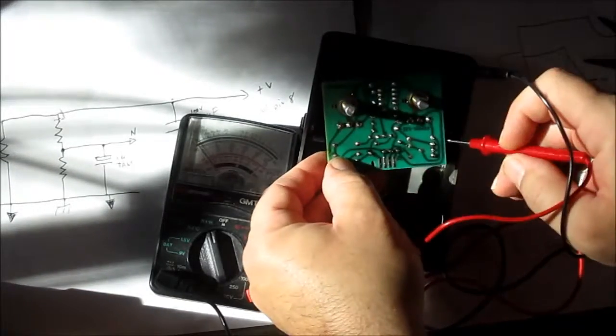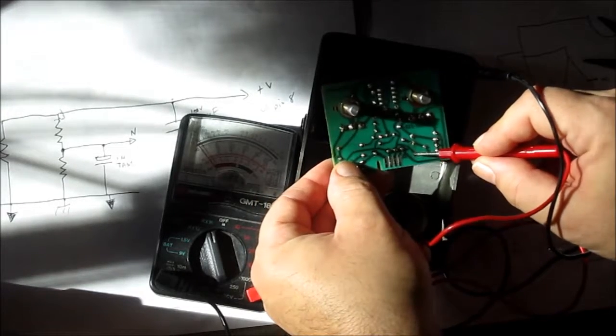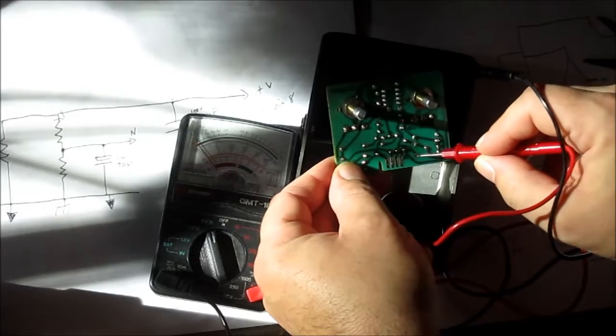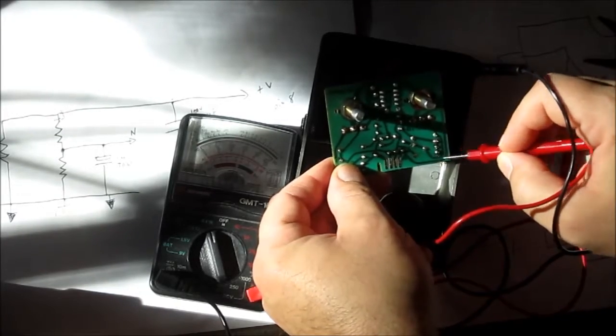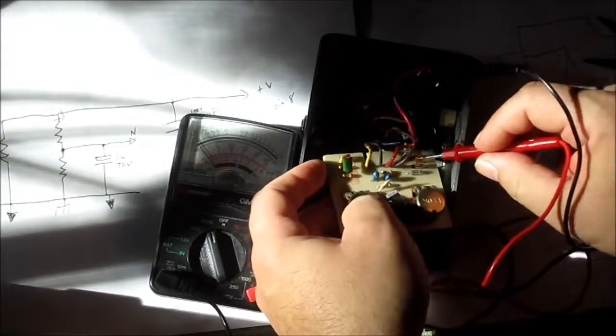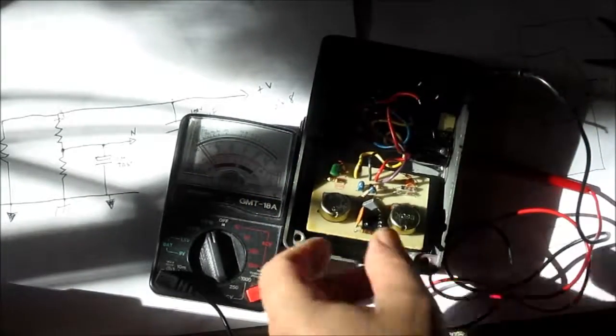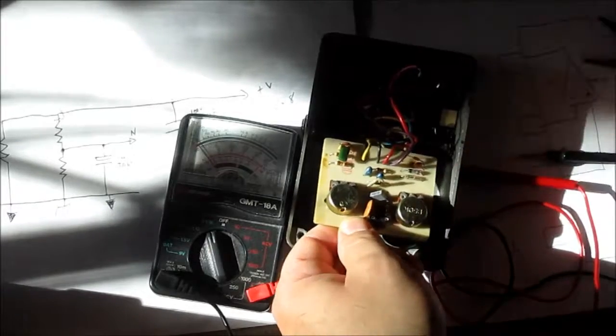We're going to go back to this trace. See, no short. So we have isolated the short to this resistor. I found something else. Let's get a closer look on this.